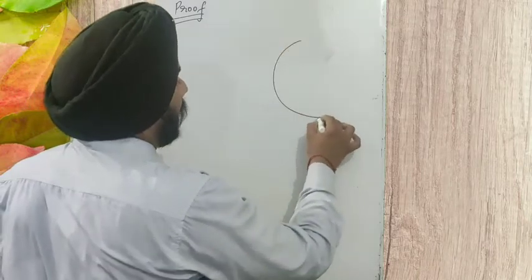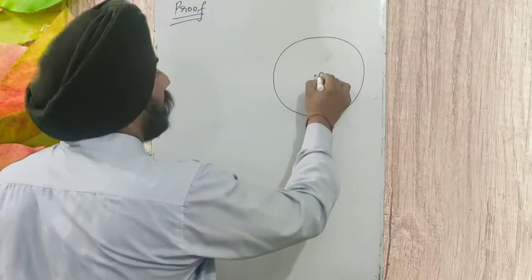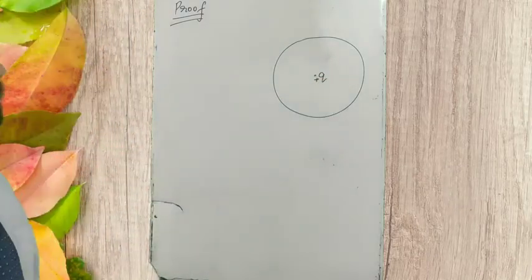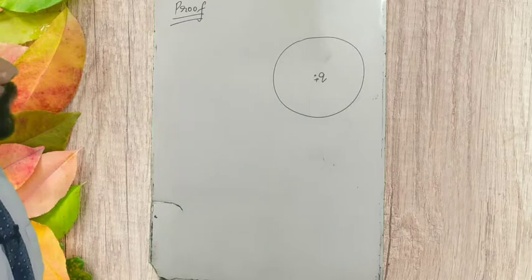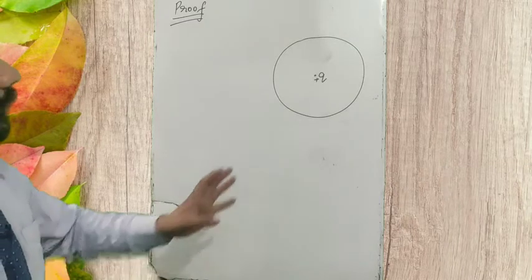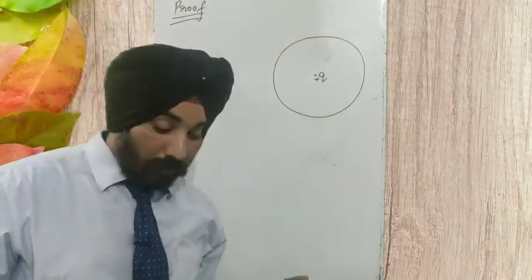Suppose we are having a spherical surface and it is given a charge plus Q at its center. A charge Q is kept at the center of this sphere. Now, to find out the electric flux passing through this closed surface — when we have a plane surface it is easy to find the electric flux, but for different kinds of surfaces like a spherical surface or a cone surface, we need to divide the figure into parts.